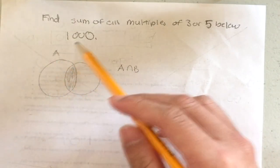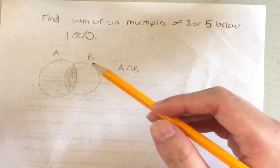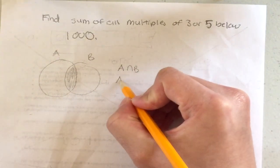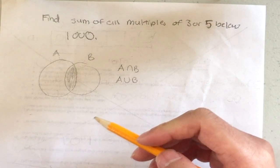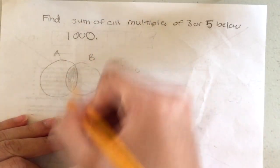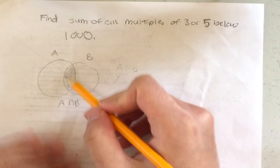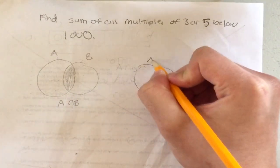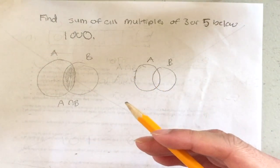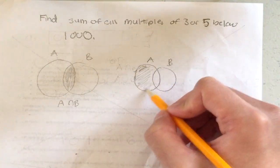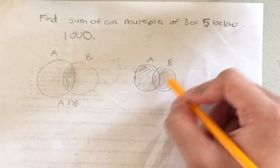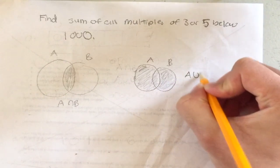When we have a set A and a set B and we want to find the group of numbers in A or B — meaning numbers in either set — we shade in everything. That full shaded region is called A union B, which represents all numbers in A or in B.